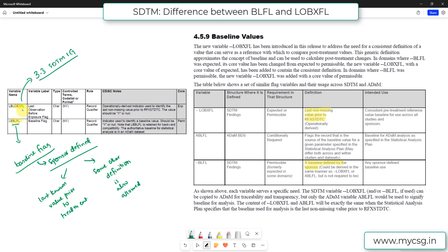But LOBXFL is introduced for a specific purpose. So here if you see, the definition for LOBXFL is last non-missing value prior to RFXSTDTC. So this definition is more narrower when compared to BLFL. So in most of the studies, the definition would still be the same, the last known value prior to the treatment.